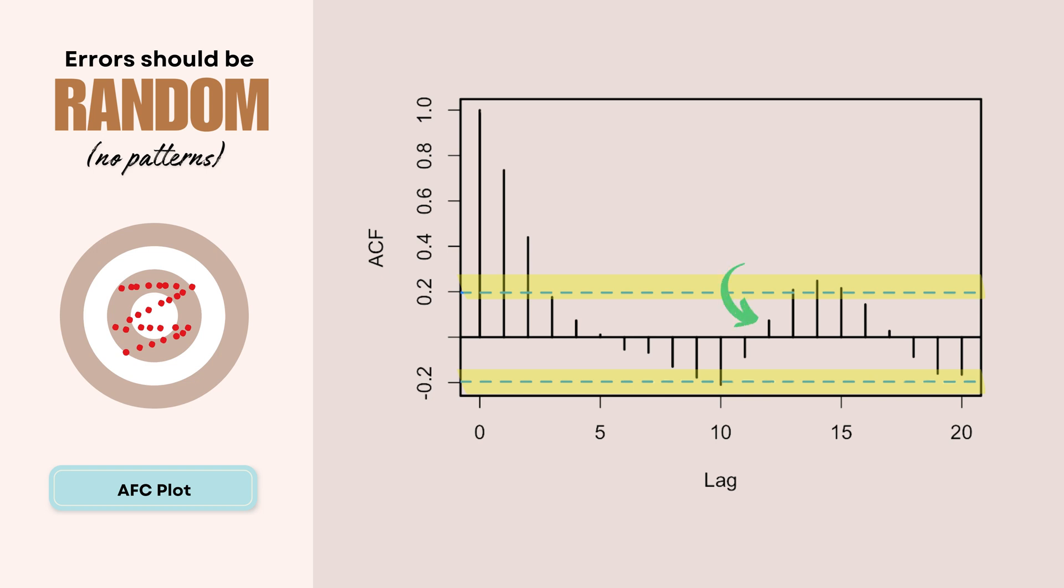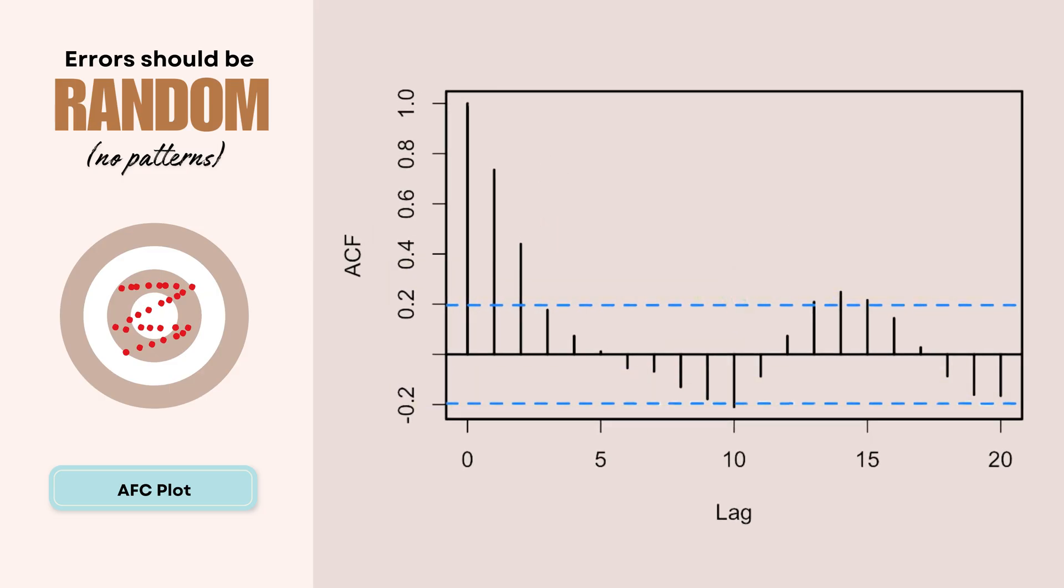Any bars that are inside these blue dashed lines are probably just random chance. Any bars that are outside of them, that means we have a pattern. So this first tall bar at lag zero looks like a problem, because it's outside of our blue dashed lines.